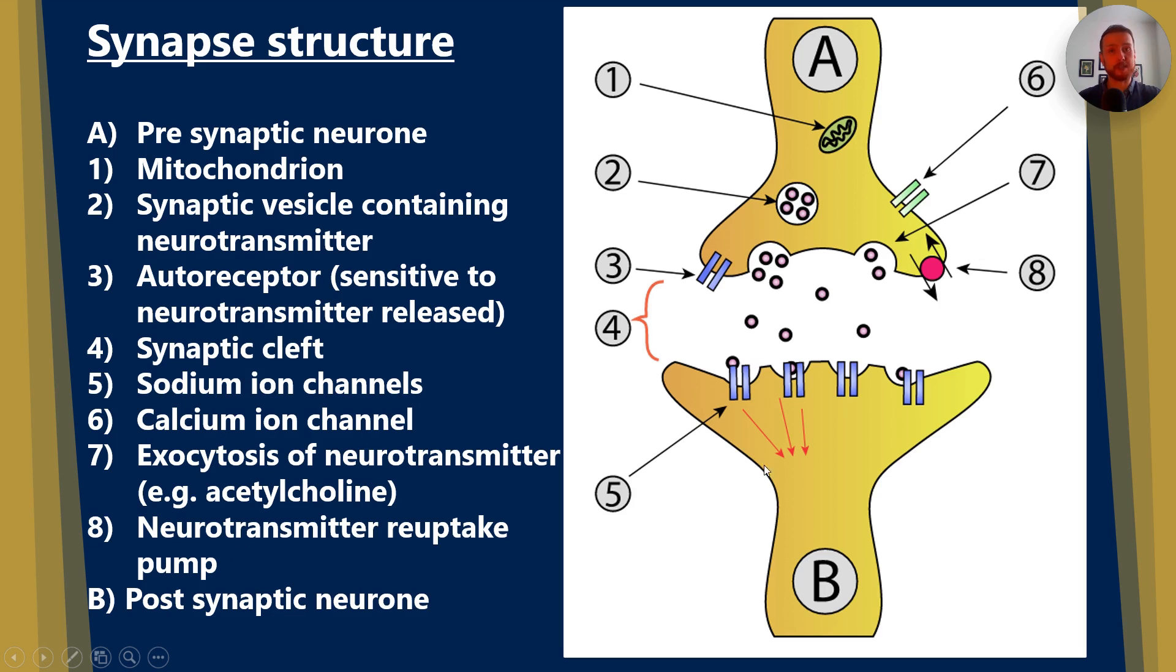Number eight, we have the neurotransmitter reuptake pump, where after the neurotransmitter's been broken down, the products of that breakdown can be reabsorbed. And B, finally, we have the post-synaptic neuron. Think about a post-graduate. That's after you've graduated.